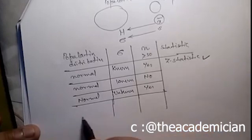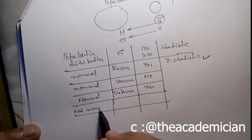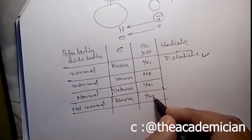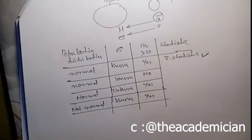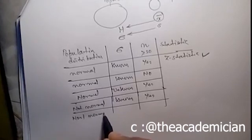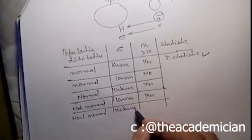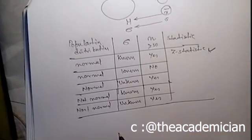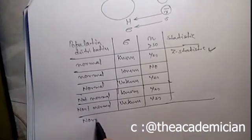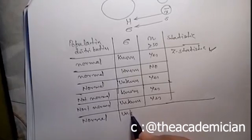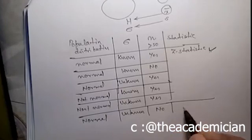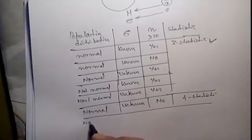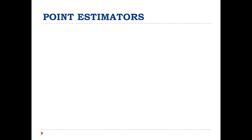If the population distribution is not normal but the standard deviation is known and the sample size is more than 30, you can still use the Z statistic. If the distribution is not normal, the standard deviation is unknown, and the sample size is large (more than 30), the Z statistic also applies. However, if the population distribution is normal, the standard deviation is unknown, and the sample size is small — less than 30 — then we must use the T statistic.